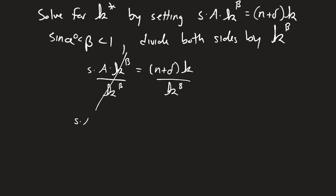So I'm going to get s times a equal to n plus delta, and this is going to be k raised to the one minus beta. The reason why we get the one minus beta over here is because when we're dividing anything with exponents, we're just taking the exponents and subtracting it. So one minus beta.